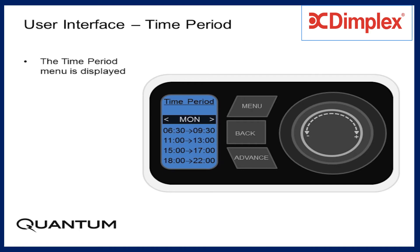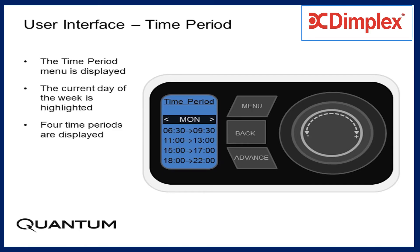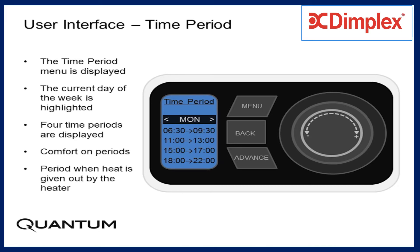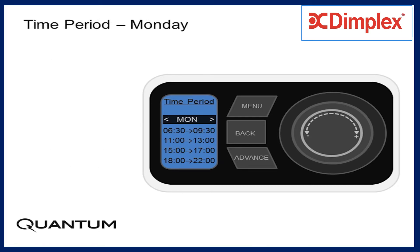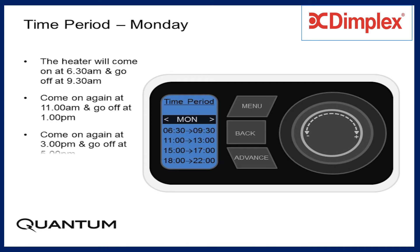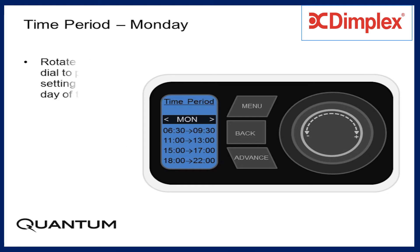The time period menu is displayed. The current day of the week is highlighted and four time periods are displayed — these are the comfort-on periods, the periods when heat is given out by the heater. The heater will come on at 6:30am and go off at 9:30am, come on again at 11am and go off at 1pm, come on again at 3pm and go off at 5pm, and then come on once again at 6pm and go off at 10pm.